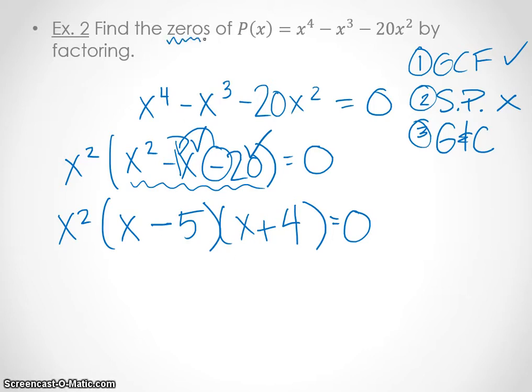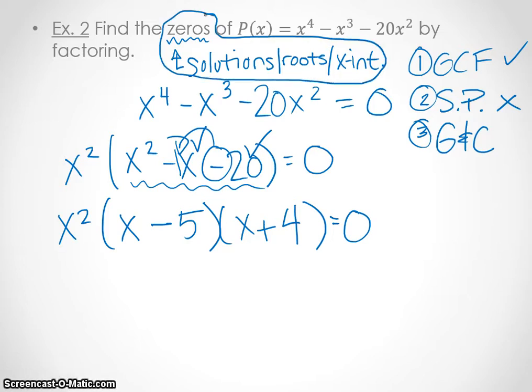So they want us to find the zeros. So zeros, when they use the word zeros, they mean solutions. They might use the word root. Or even x-intercepts, which we're going to see when we graph here in a bit. So these four words, zeros, solutions, roots, and x-intercepts are synonyms for one another. So anytime you see that, it means basically to find your answer.